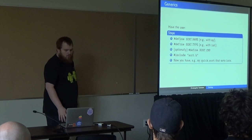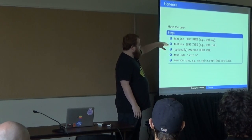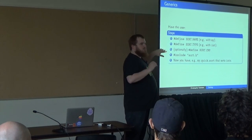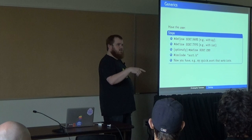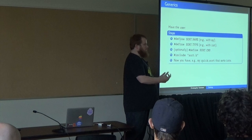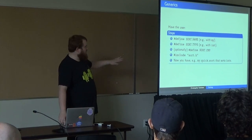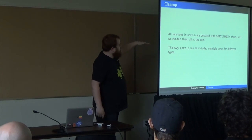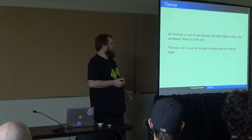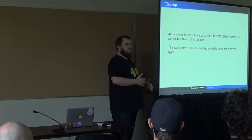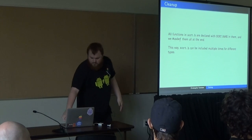That gets us all the way to generics — basically re-implementing C++ function templates in C. The way you use this library: define SORT_NAME (e.g., 'my_sort'), define SORT_TYPE (e.g., int), optionally define a comparison function, and then include sort.h. Now you have 'my_quicksort' that sorts ints quickly. All the macros are undefined at the end of the header, so you can include sort.h multiple times — once for int sort, once for float sort — in the same code.